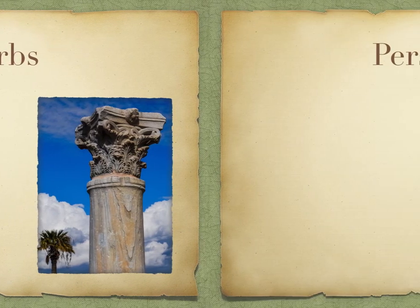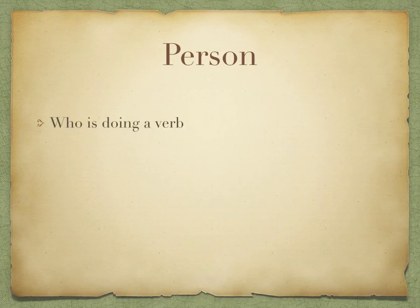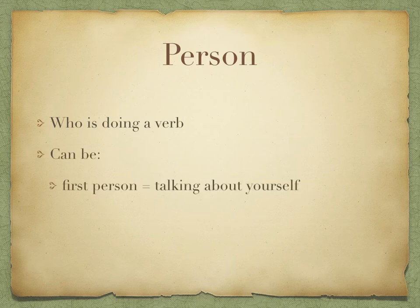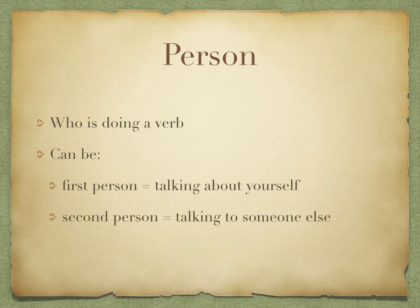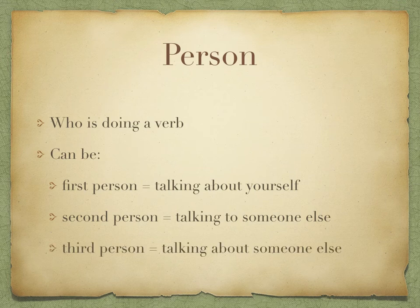Firstly, person. Person tells us who is doing a verb, or the perspective that the action is being told from. This can be either first person, which is talking about yourself; second person, which is talking to someone else; and third person, which is talking about someone else. Think of first to third as moving further away from yourself.